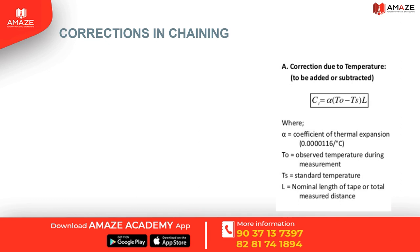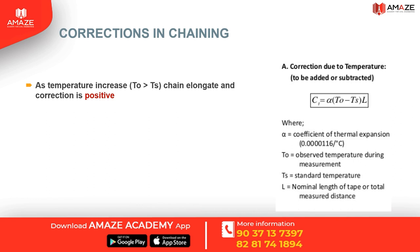The first correction is correction due to temperature, which can be added or subtracted. The equation is alpha into (To minus Ts) into L, where alpha is the coefficient of thermal expansion, To is the observed temperature, Ts is the standard temperature, and L is the length. As temperature increases, To becomes greater than Ts, the chain will elongate, and the correction is positive. When Ts is greater than To, the correction is negative.